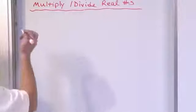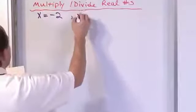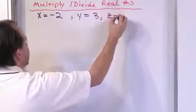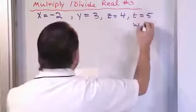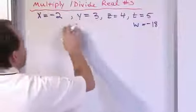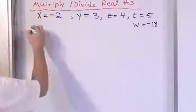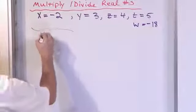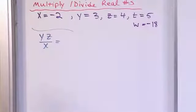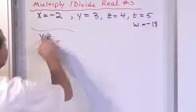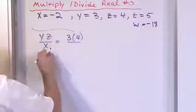Now we're going to do a substitution problem. Let x = -2, y = 3, z = 4, t = 5, and w = -18. By now you should realize it's not a big deal — all you do is substitute them in. Let's say we have y times z divided by x. Substituting: y is 3, z is 4, and x is negative 2.